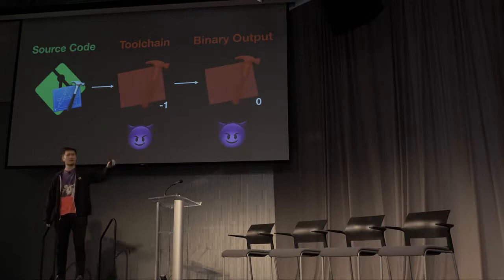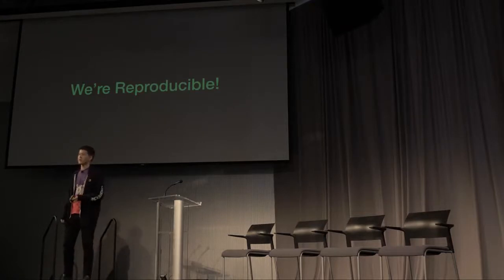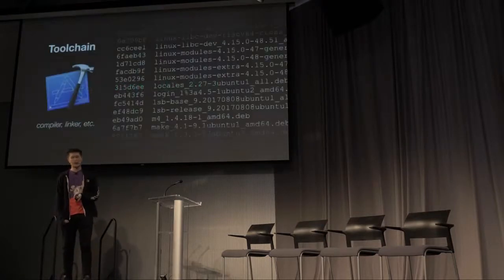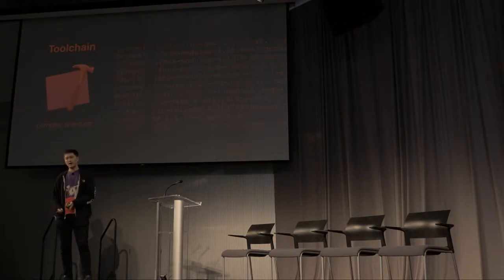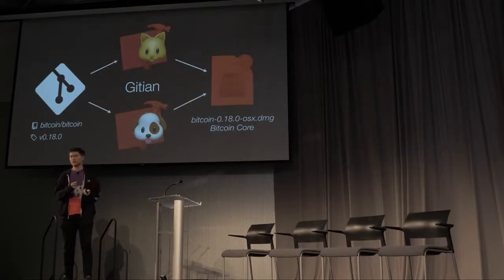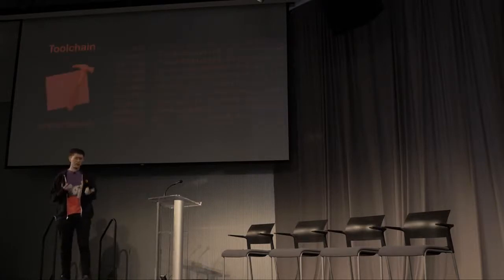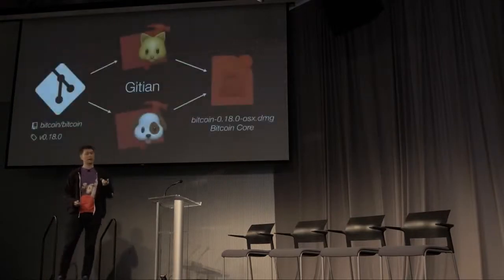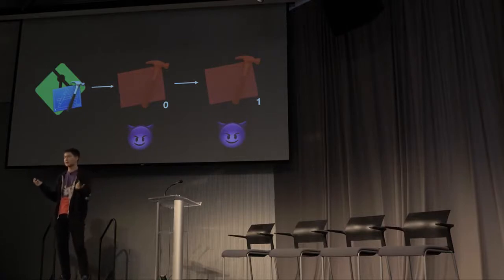What that means is that we can be reproducible with Gitian, but if the toolchain that we download from Ubuntu or Red Hat or Apple is malicious, then what we have is a reproducible system that is reproducibly malicious. So we're reproducible, but we're reproducibly malicious. What can we do about the fact that our toolchain consists of countless trusted binaries that can be reproducibly malicious, with the possibility of a trusting trust attack propagating down our chain and us having no visibility into it whatsoever?